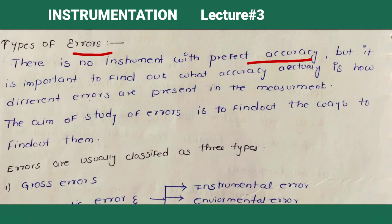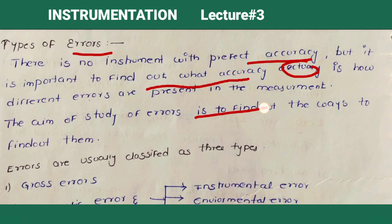There is no instrument with perfect accuracy in this world, but it is important to find out what accuracy exactly it has. Different types of errors are present in a measurement system. The aim of studying errors is to find out the ways to detect them.